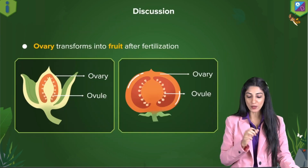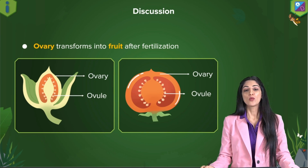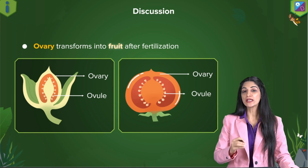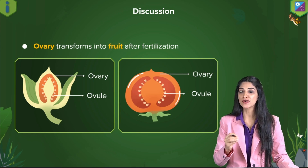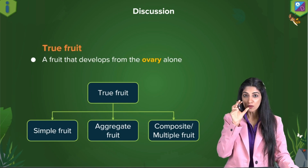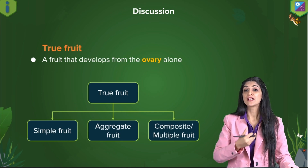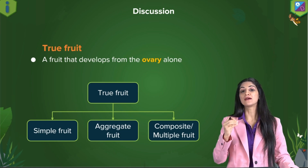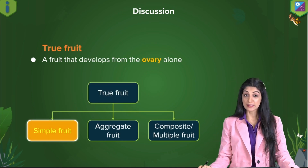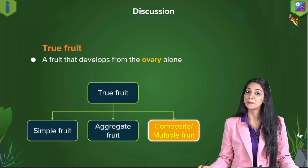Let's discuss the concept of fruit formation. We already know that the ovary transforms itself into fruit post-fertilization. A true fruit is where the ovary develops into the fruit — the edible, juicy part you are eating is the ovary. A true fruit is further categorized into simple fruit, aggregate fruit, and composite or multiple fruit.